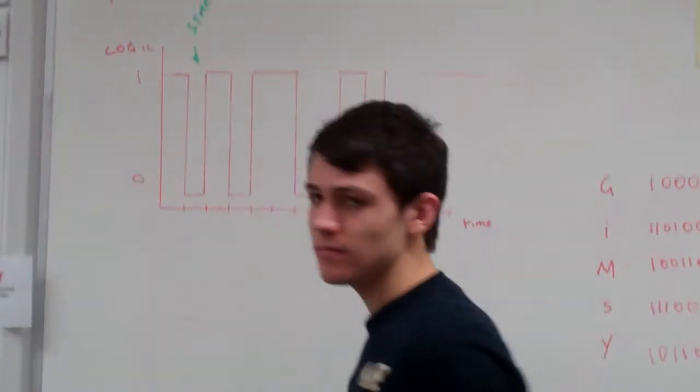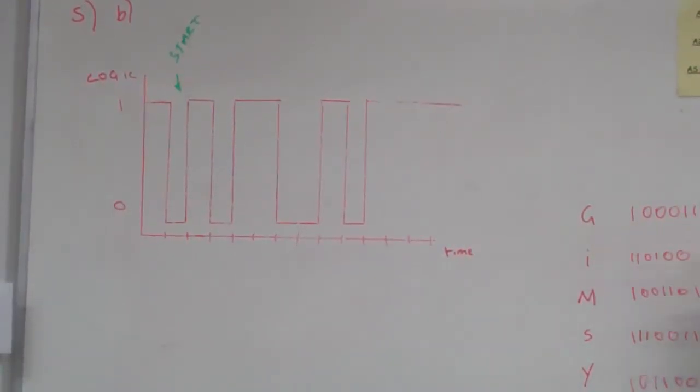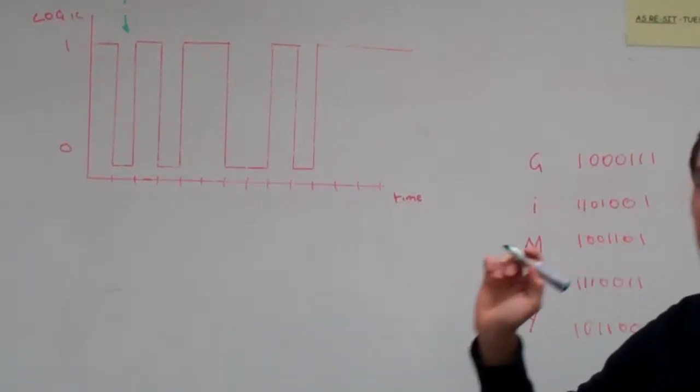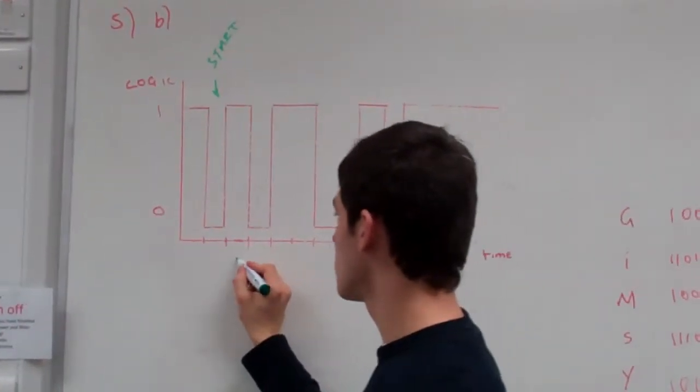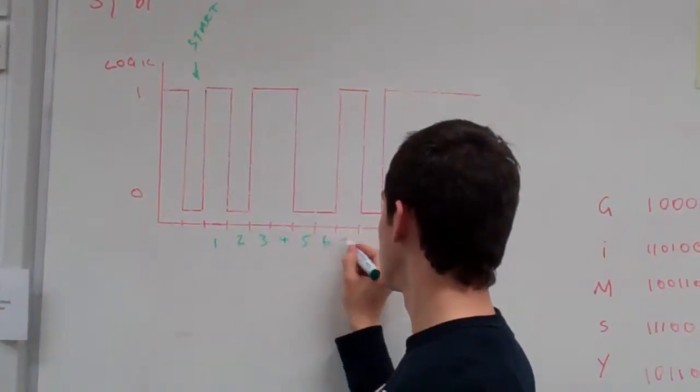Then we know that all of the code has been sent in seven bits, so we can count on from there, seven bits, until we get to the parity bit. So this is one, two, three, four, five, six, seven. So this is our seventh bit,